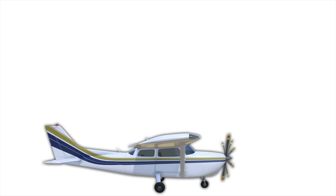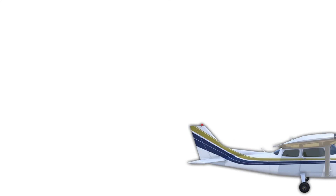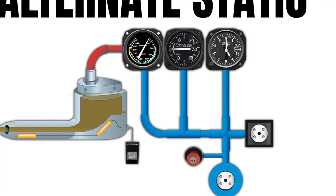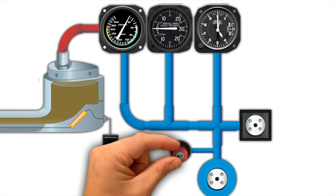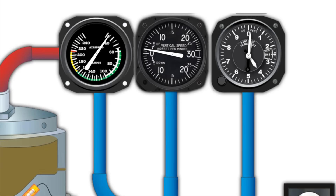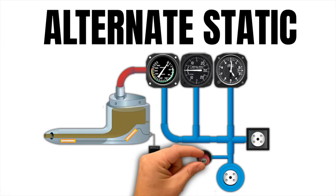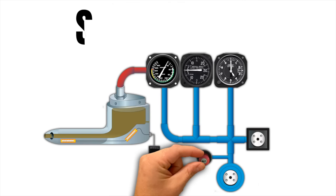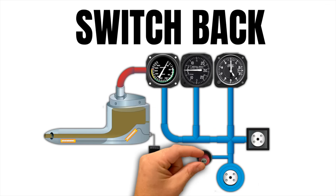The airspeed indicator should read zero and should not move until you start rolling down the runway — that's why a lot of people check it during the takeoff roll. Another thing to check is the alternate static system, if the airplane has one. To check it, pull the knob to the open or on position. When you turn on the alternate static, the VSI should jump up slightly for a second and then go back to zero. The altimeter and airspeed indicator should both go up slightly and stay there, though it's okay if you don't see much change on the ground. The big thing is the VSI — it should jump up and go back to zero. After that, you can switch back to the primary static system.